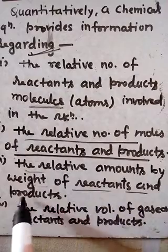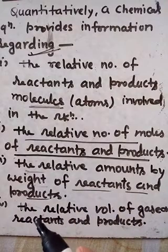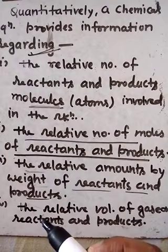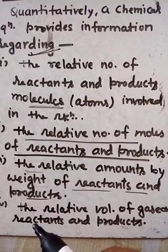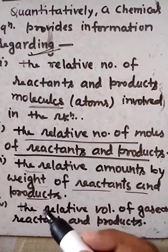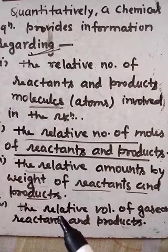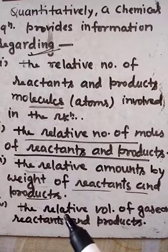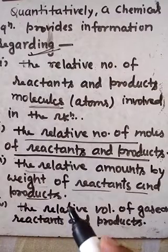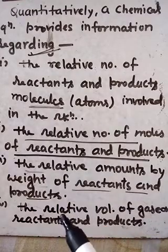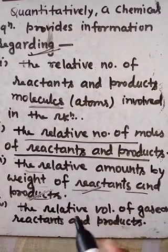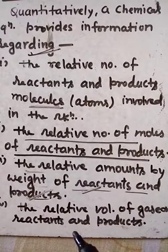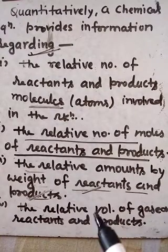This is followed by: how many molecules of reactants and products react together to form a new substance, and what is the number of moles formed after the chemical reaction. Third, the relative amounts by mass of reactants and products — meaning what mass of reactants react with each other to form products, and what mass of product is formed during or after the chemical reaction.